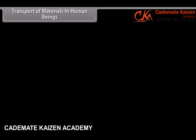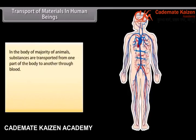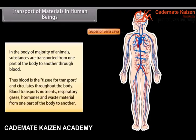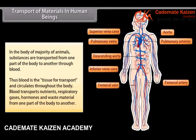In the body of majority of animals, substances are transported from one part of the body to another through blood. Thus, blood is the tissue of transport and circulates throughout the body. Blood transports nutrients, respiratory gases, hormones and waste material from one part of the body to another.